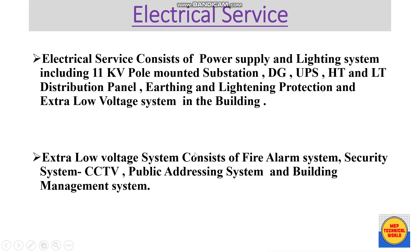Now coming to electrical service — electrical service consists of power supply and lighting system, including an 11 kV pole-mounted service station, diesel generator, UPS, HT and multi-distribution panel, earthing and lightning protection, and extra low voltage systems in the building. Extra low voltage systems consist of fire alarm system, security system, CCTV, public addressing system, and building management system.